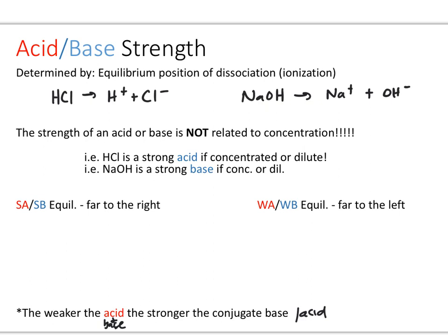If we look at the dissociation processes here, we have hydrochloric acid and sodium hydroxide. Hydrochloric acid is an acid — it's going to break up into H+ and Cl− ions. The more product we have present, the farther to the right our equilibrium is going to lie. If we were to look at this with respect to an equilibrium expression, we would have a Ka expression. The more products and the less reactants, the stronger the acid is going to be.